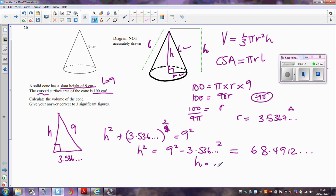In order to find h, I'm going to square root that 68.49 and so on. And that comes out as 8.27594 centimeters. Now, that's h.